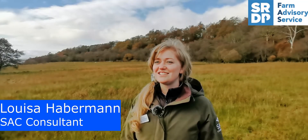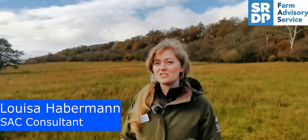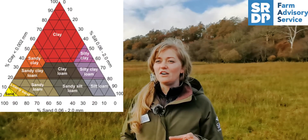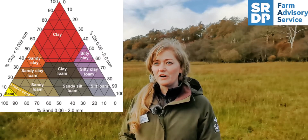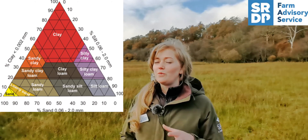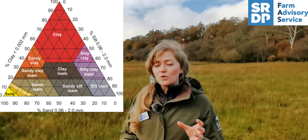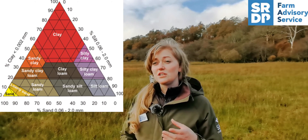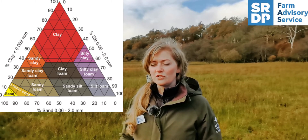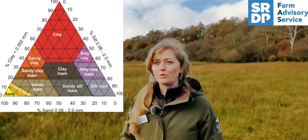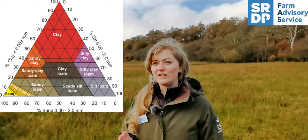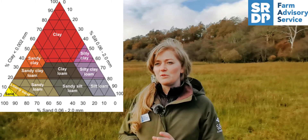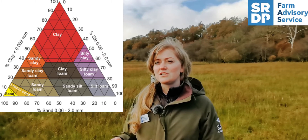Soil texture is the relative composition of sand, silt and clay of the mineral part in a soil. Sand is the coarsest part of the soil texture classes — you can usually see it in your soil sample or feel it with your hands. Silt is the middle class and clay is the smallest particle size.